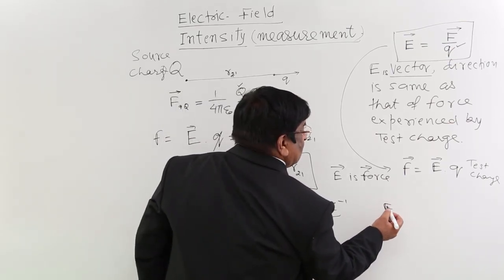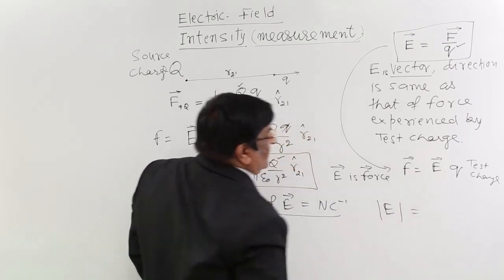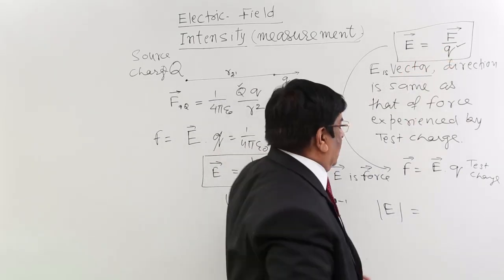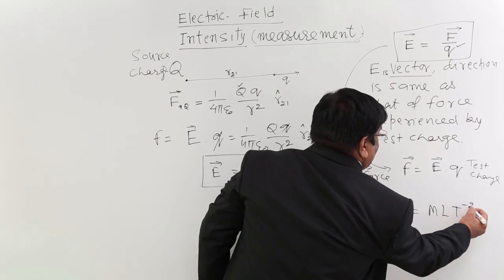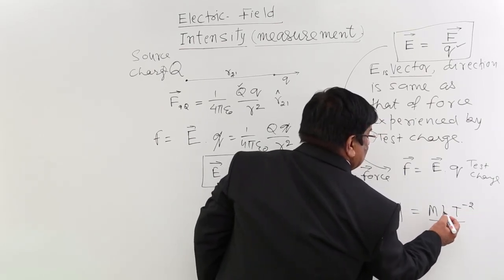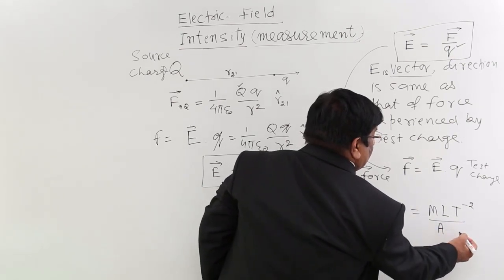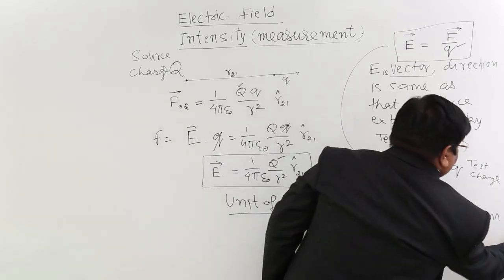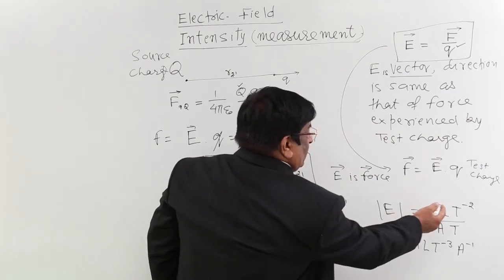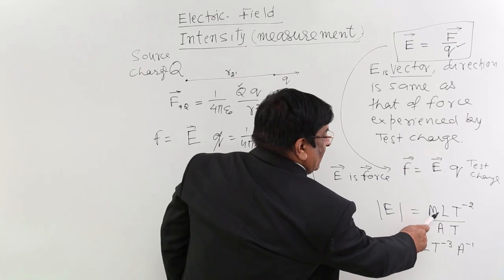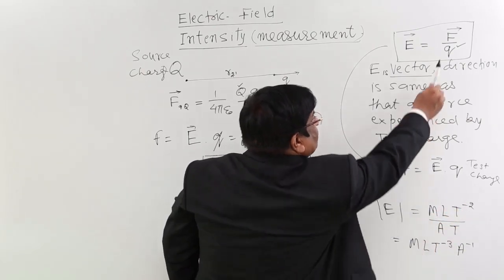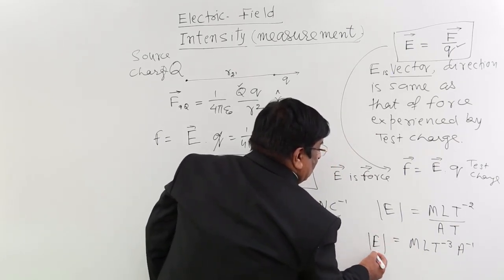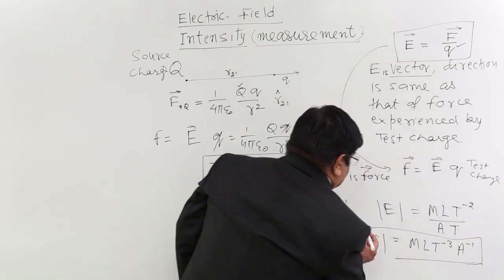Can we find the dimensions? Yes. Electrical quantities are favorites of examiners. For electric field: force has dimensions MLT⁻², and charge has dimensions A·T (current multiplied by time). So the dimensions of E are MLT⁻² divided by AT, which gives MLT⁻³A⁻¹. Please remember this — it is generally asked in one-mark questions and in competitive exams.